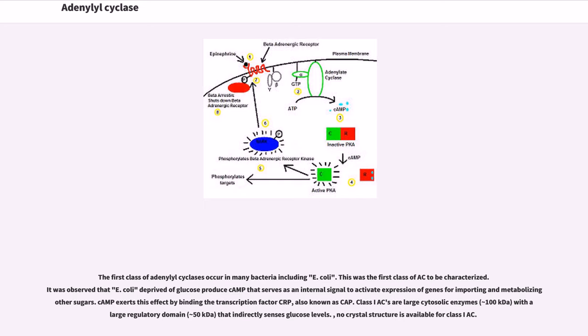The first class of adenylyl cyclases occur in many bacteria including E. coli. This was the first class of AC to be characterized. It was observed that E. coli deprived of glucose produce cAMP that serves as an internal signal to activate expression of genes for importing and metabolizing other sugars. cAMP exerts this effect by binding the transcription factor CRP, also known as CAP. Class I ACs are large cytosolic enzymes (~100 kDa) with a large regulatory domain (~50 kDa) that indirectly senses glucose levels.